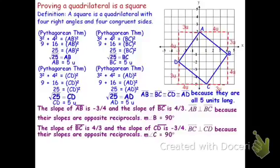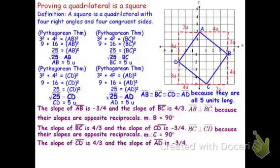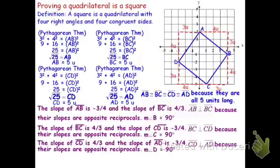Turning to angle D: angle D is made from segments CD and AD. CD has a slope of four-thirds and the slope of AD is negative three-fourths, so CD is perpendicular to AD because they have opposite reciprocal slopes. If those segments are perpendicular, then the angle they form has a measure of 90 degrees — so the measure of angle D is 90 degrees.